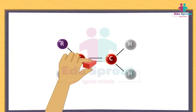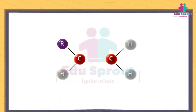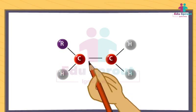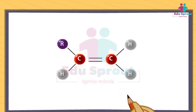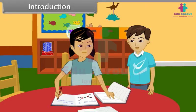What are you doing? Now this is correct. No, this is a double bond and this is an alkene. Teacher has taught us about single bonds and alkanes, but she did not teach alkenes. What are they? Alkenes are unsaturated hydrocarbons, and so are alkynes. Come, I will tell you in detail about alkenes and alkynes.